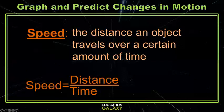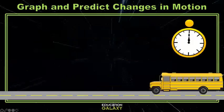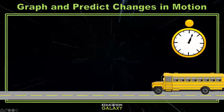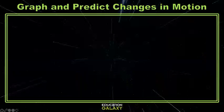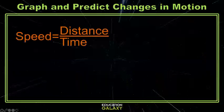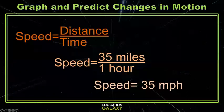In American cars, we use miles and hours to calculate speed. Let's say it took your school bus one hour to go 35 miles down the road. I use my equation for speed, which is speed equals distance divided by time. I plug in my numbers so that speed equals 35 miles divided by one hour, and I come up with my speed being 35 miles per hour.